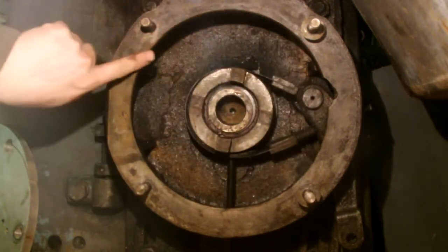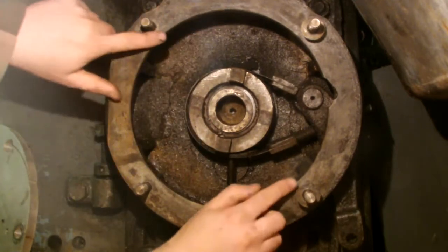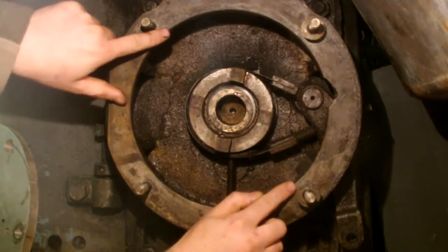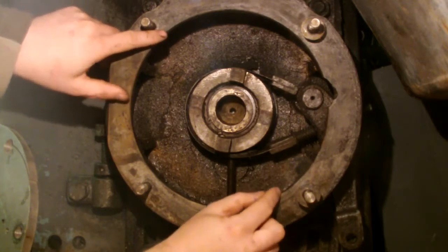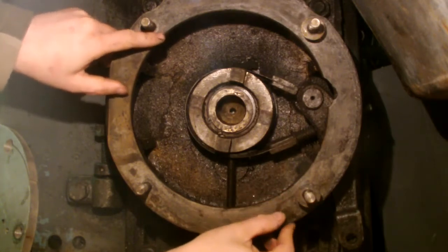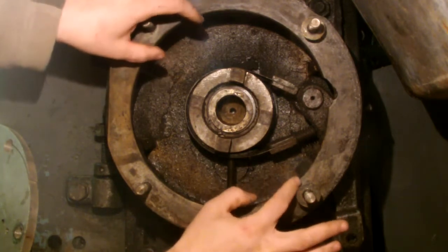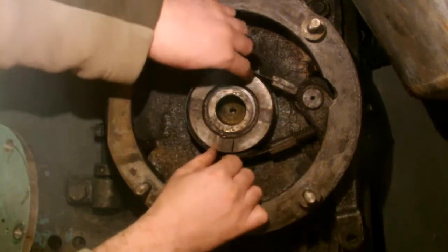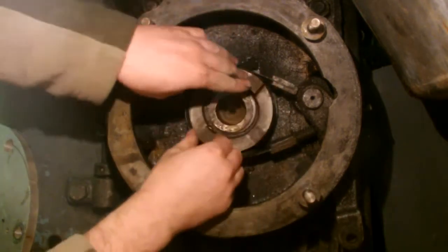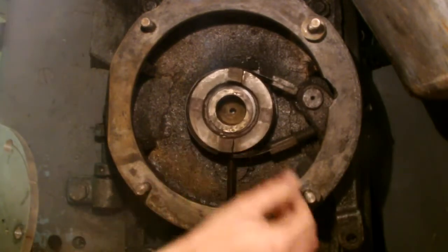You will notice that there is also quite a well-machined circle within this mounting, and that is usually to accurately center the motor flange on the mounting so that the spindle shaft is directly in center with the gear shaft on there.